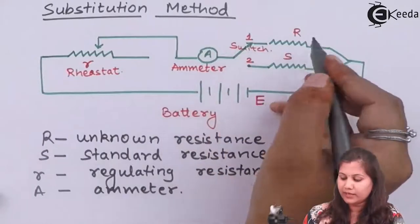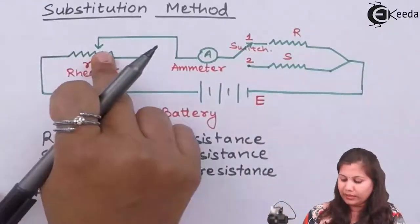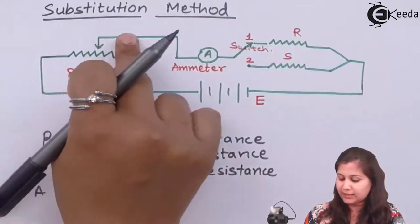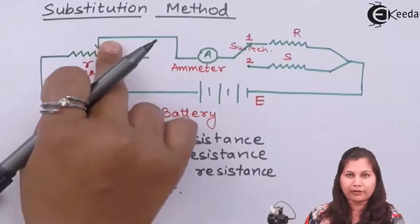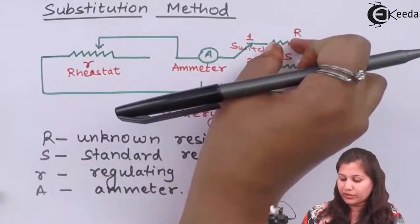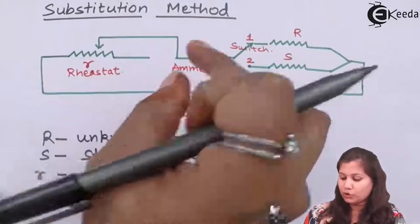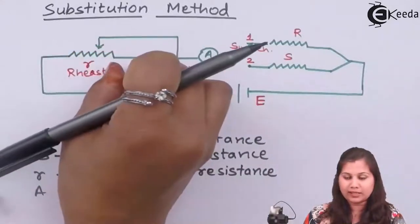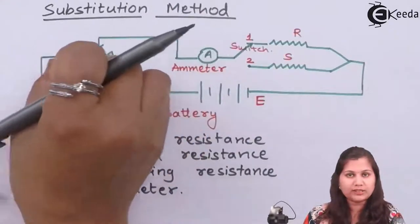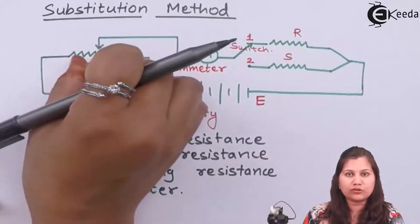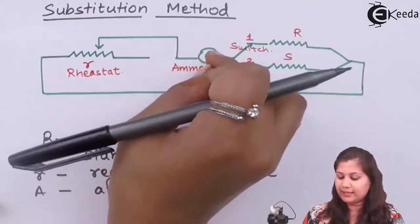When the switch is at position one, the unknown resistance is connected in the circuit. The circuit will consist of the regulating rheostat resistance, then the ammeter, then the unknown resistance, and then the battery. So when the unknown resistance is connected in the circuit, current will start flowing. We are going to vary this regulating resistance with the help of the rheostat by moving its sliding contact, so the value of this resistance will change, and by changing this value we are going to choose a proper scale on the ammeter.